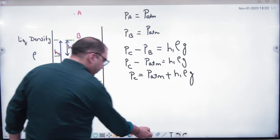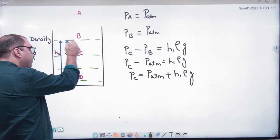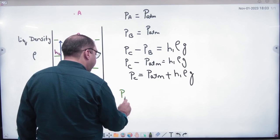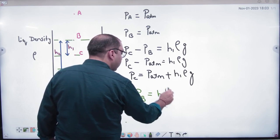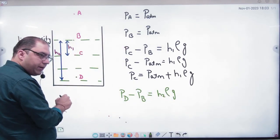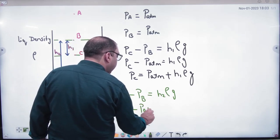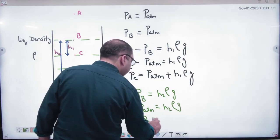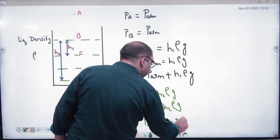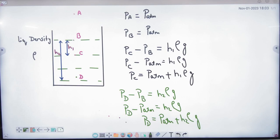Let's talk about D point pressure. Pressure at D minus pressure at B equals h2·ρ·g. D point is below B by a distance of h2. B point pressure is atmospheric, so D point pressure equals P_atmospheric plus h2·ρ·g. Is that clear? Any doubt?